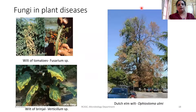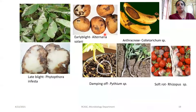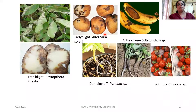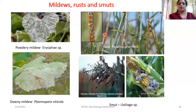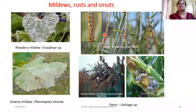Fungi also play a major role in causing various diseases. I have listed out wilt diseases in case of tomatoes, brinjal, and elm — especially Dutch elm disease caused by Ophiostoma species. Please make a note of all these pathogens and the diseases they cause — very important for competitive examinations. The blight disease of potatoes: early blight is caused by Alternaria solani, and late blight is caused by Phytophthora infestans. There are also damping off diseases, anthracnose, powdery mildew, rust diseases, downy mildew, and smut diseases.